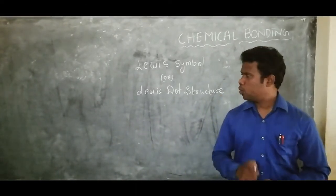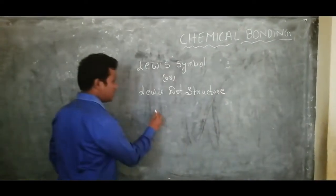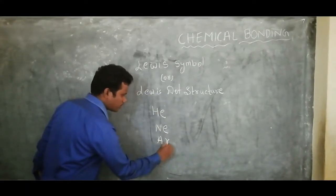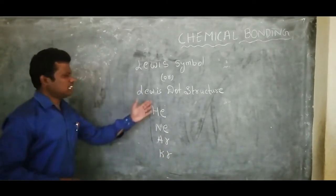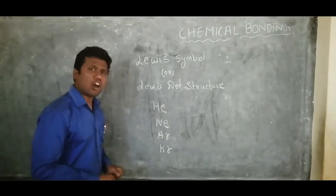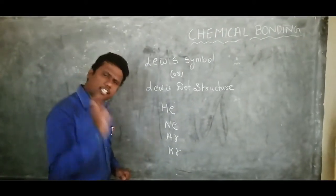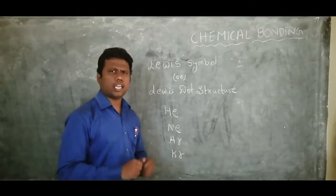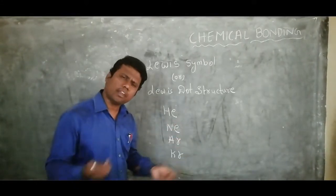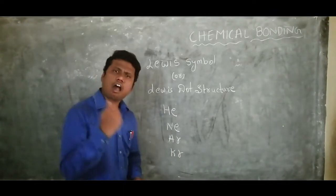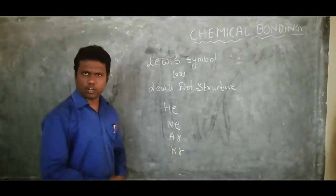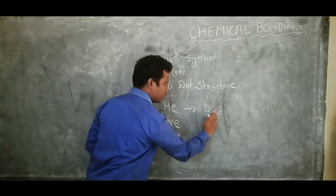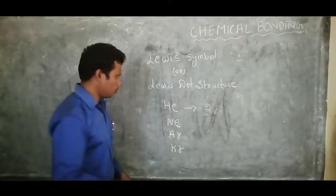Why do noble gas elements have valency zero? If we observe the electronic configuration of noble gases — for example helium, neon, argon, krypton, and so on — these elements belong to noble gases, the 18th group. We call them stable elements because they do not participate in any chemical reaction like other group elements.